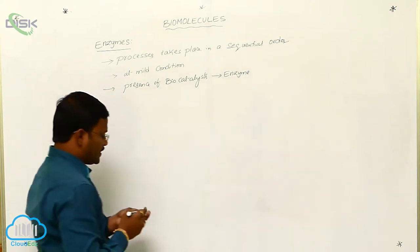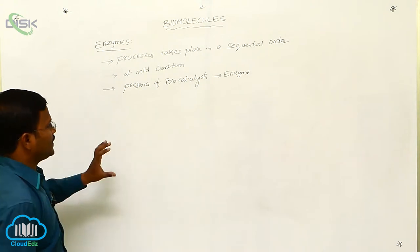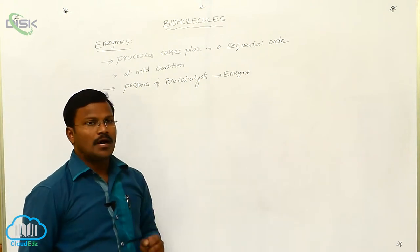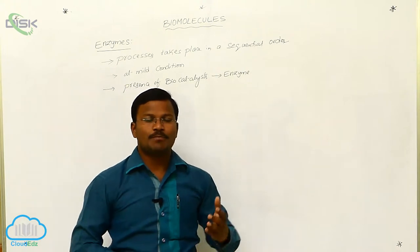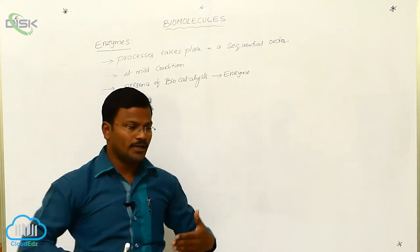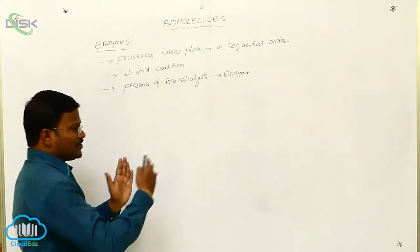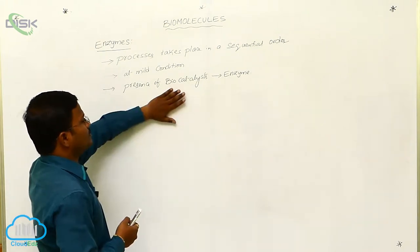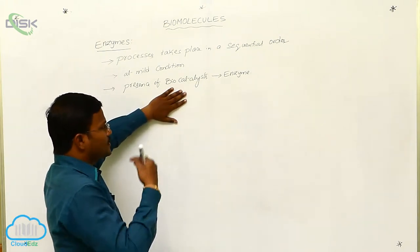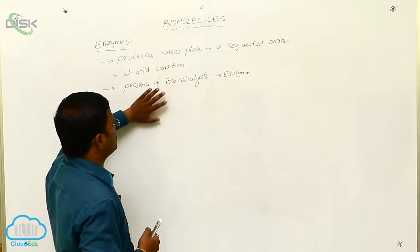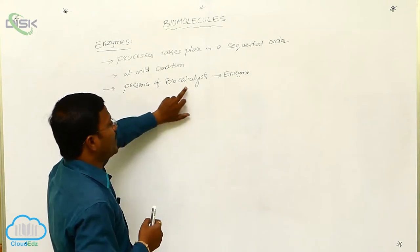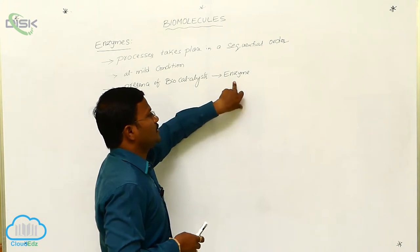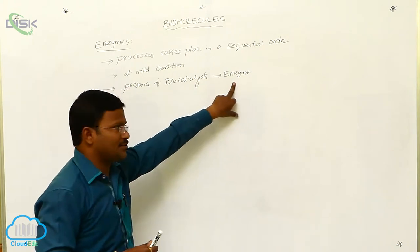It is necessary to specify one sentence here. The chemical reactions or metabolic processes observed in the living organism body are a sequential order of chemical reactions. Every chemical reaction inside the living organism body takes place in the presence of biocatalysts. Those biocatalysts which promote chemical reactions in the living organism body are called as enzymes.